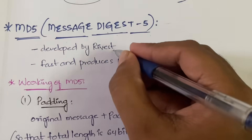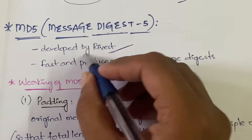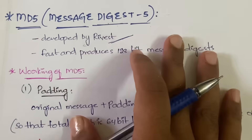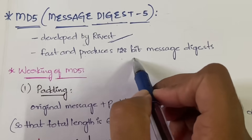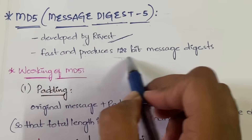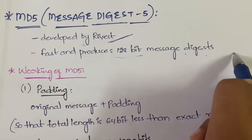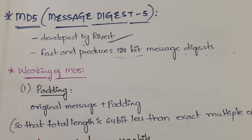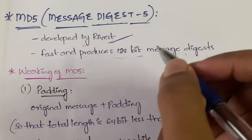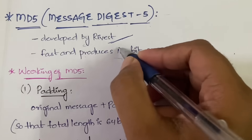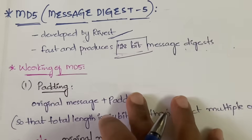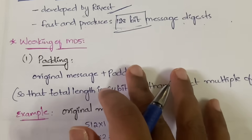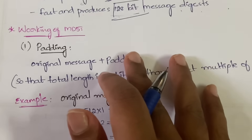MD5 was initially developed by Rivest. It is fast and it produces a 128-bit message digest. Message digest means you will be breaking a message into a number of parts, and the size of each part will be 128 bits.